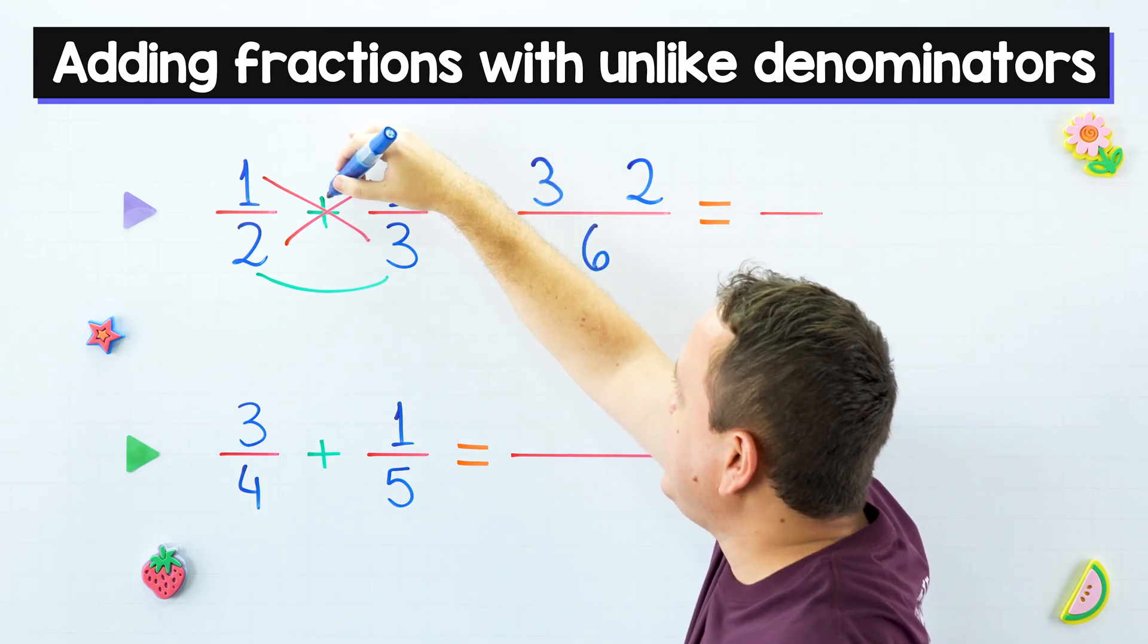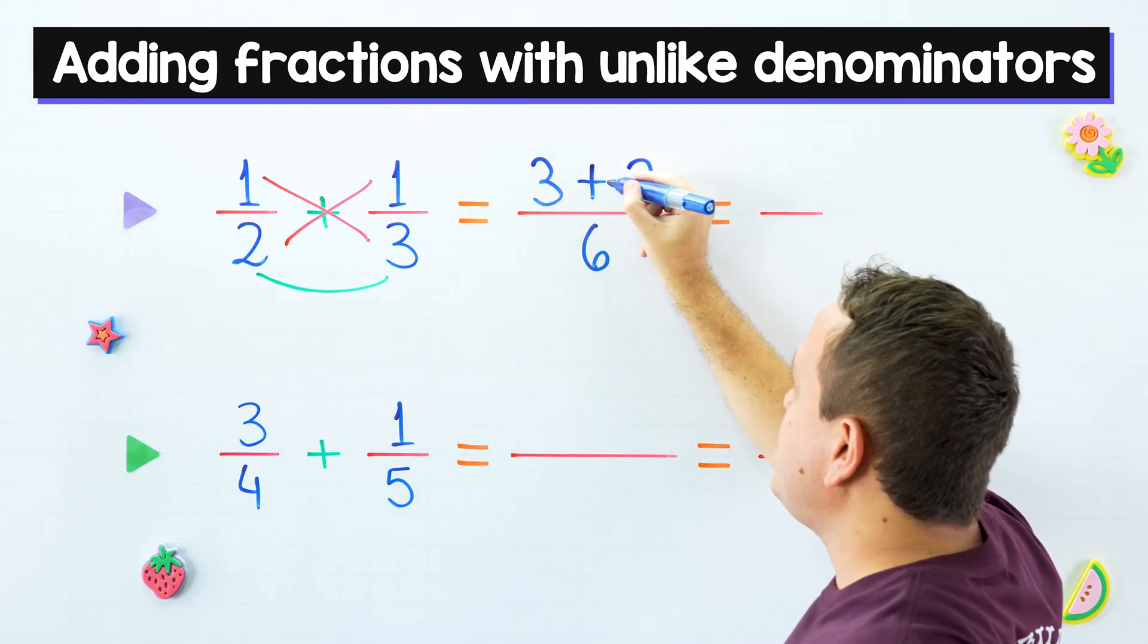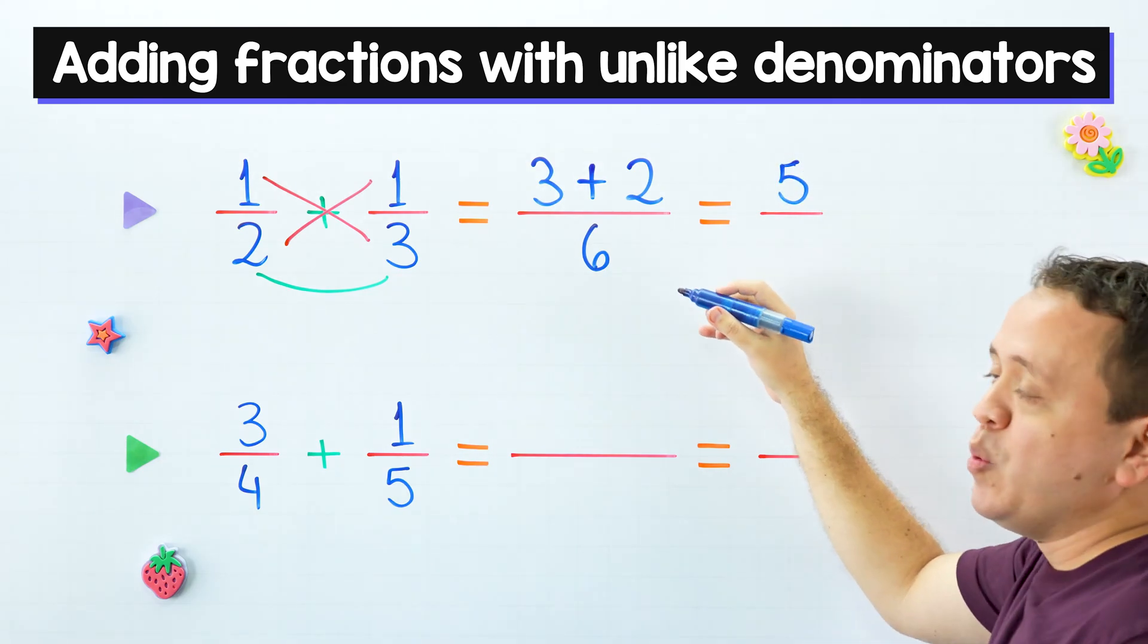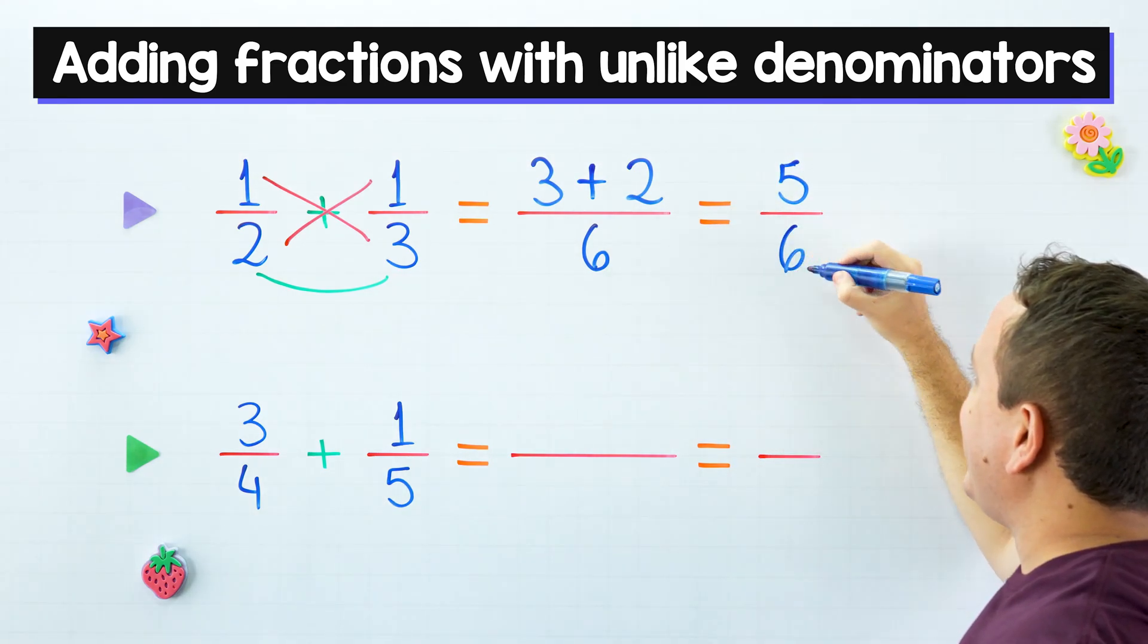Next, we put this plus sign over here. Three plus two equals five. Finally, we keep the denominator. Six over there, six over here.